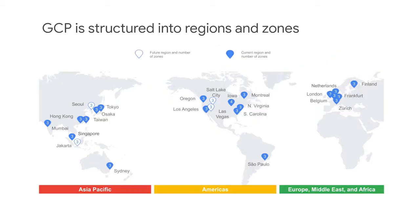Behind the services provided by Google Cloud Platform lie a huge range of GCP resources — physical assets such as physical servers and hard disk drives, and virtual resources such as virtual machines and containers. We manage these resources within our global data centers. As of mid-2019, GCP has expanded across 20 regions, 61 zones, and more than 200 countries and territories. This expansion will continue.